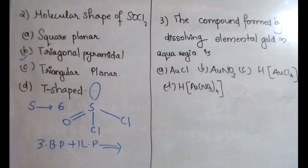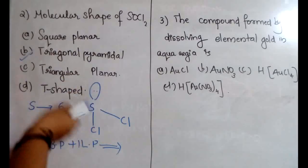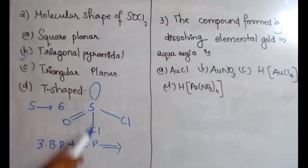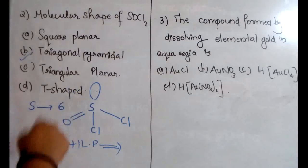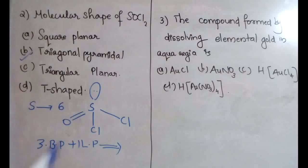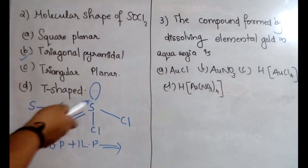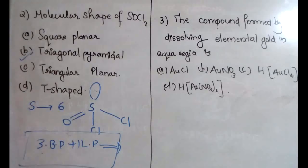Sulfur forms one bond pair with oxygen (sigma only) and one each with the two chlorines, giving three bond pairs. The remaining two electrons form one lone pair. Three bond pairs plus one lone pair gives a trigonal pyramidal shape. Option B is the correct answer.